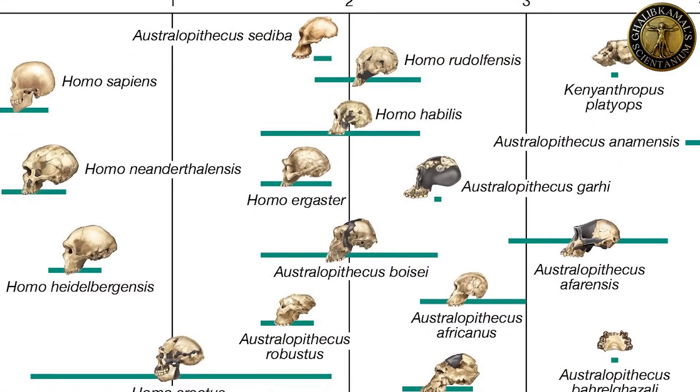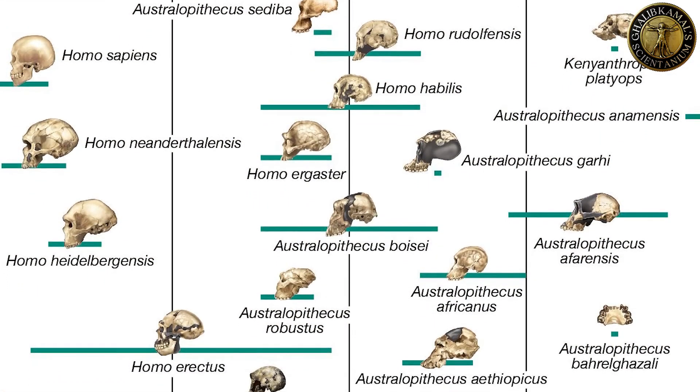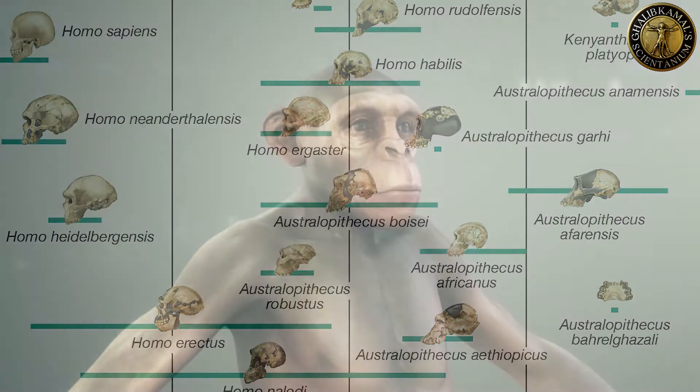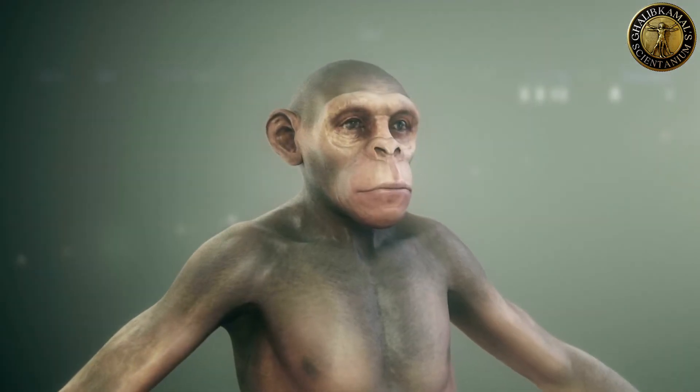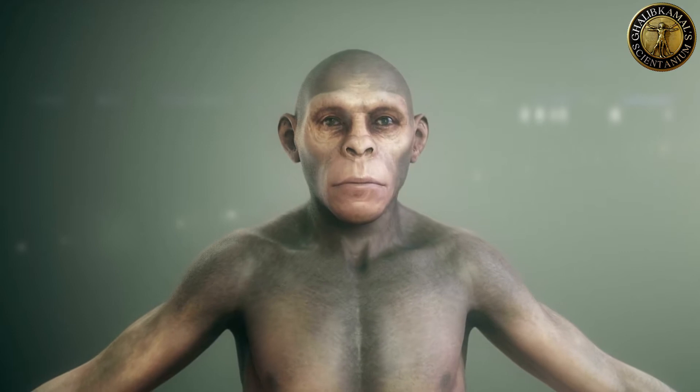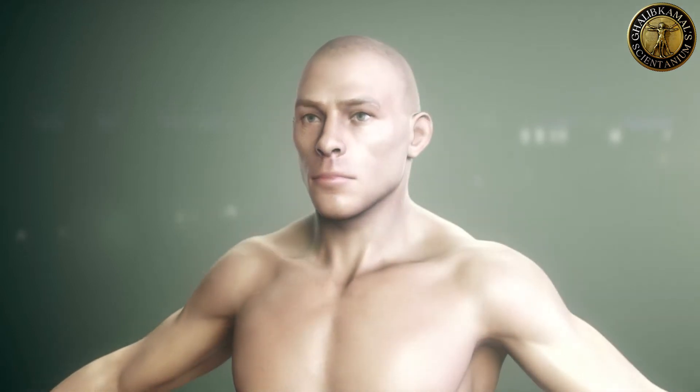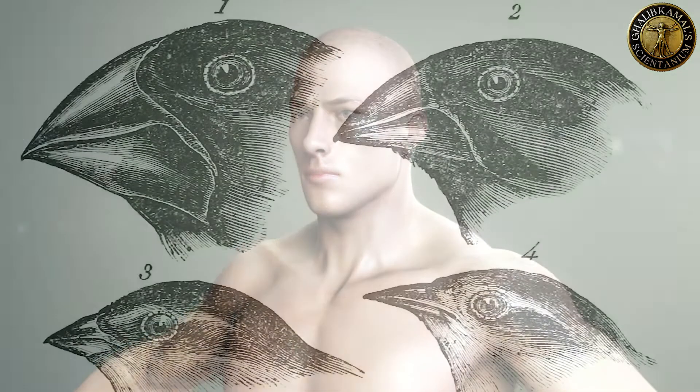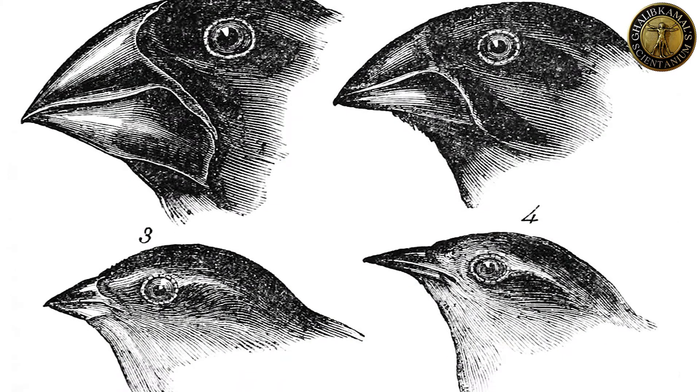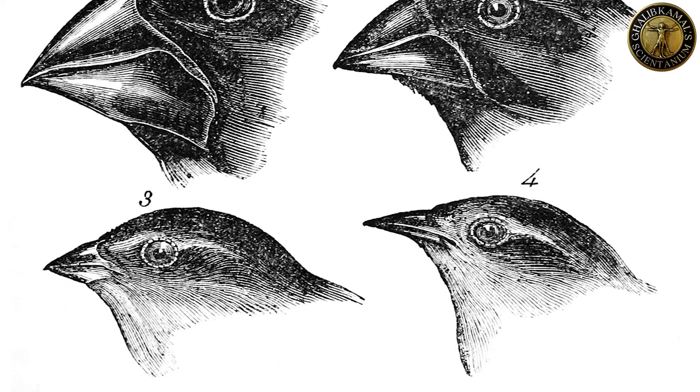Evolution takes millions if not hundreds of thousands of years through this process. Evolution through natural selection is a gradual process. But throughout billions of years of Earth's history, it has provided us with a remarkable diversity of life on this planet.